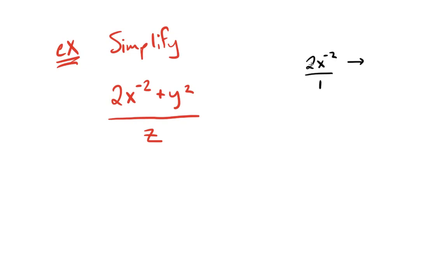So if we want to get rid of that negative exponent, what we're going to do is move that x to the negative 2 and make it a positive 2 in the denominator.